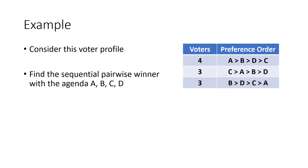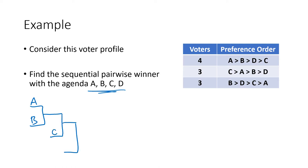Here we have an example of a voter profile, and let's say the agenda is alphabetical order: A, B, C, D. It's kind of like a tournament bracket. In the first round we have A versus B, and whoever wins goes up against C, the next person on the list, and then whoever wins that goes up against D, and whichever candidate is left at the end is the overall winner.